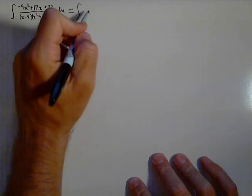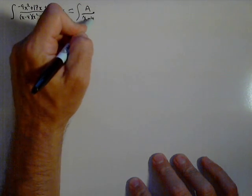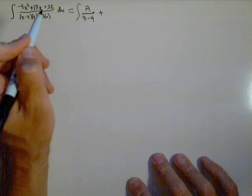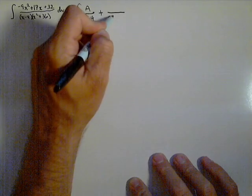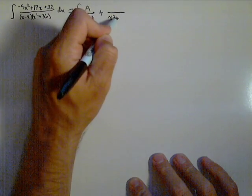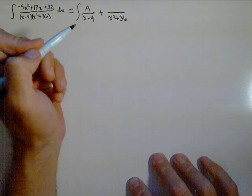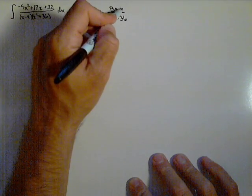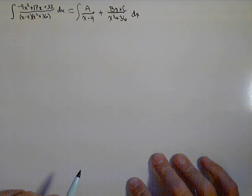is we're gonna be looking at an antiderivative of the form A over x minus 4, because it's a linear factor. It only gets an A. Plus, now we have an irreducible quadratic factor for the second part, x squared plus 36, which means we have to account for the fact that the numerator might be linear. So Bx plus C dx.